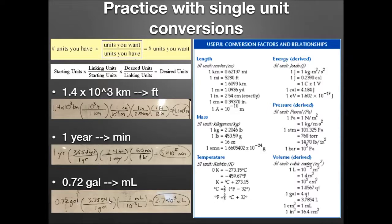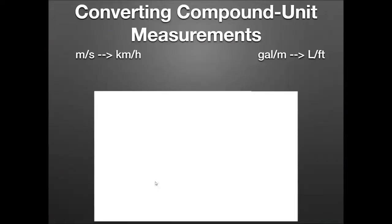I converted gallons to 3.7854 liters, so gallons cancel. Then I need to convert liters to milliliters with a prefix conversion. Milli stands for 10 to the minus 3. So one milliliter is 10 to the minus 3 liters. The liters cancel and I'm left with 2.7 times 10 to the 3 milliliters. A gallon is quite large.